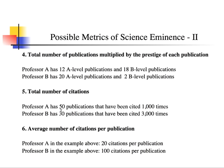Professor A might have 50 publications cited 1,000 times in total, while Professor B has 30 publications cited 3,000 times. If we had only looked at the number of publications, Professor A would win — but Professor A's work has been cited three times less than Professor B's. Number of citations therefore reflects how much your research has been diffused and used by others.